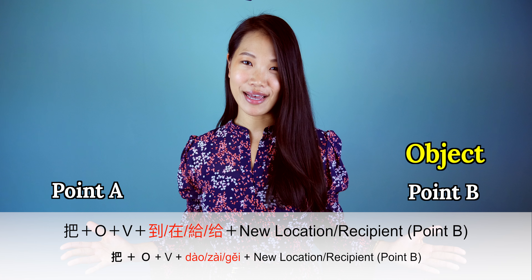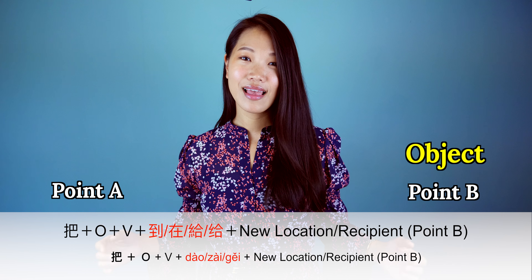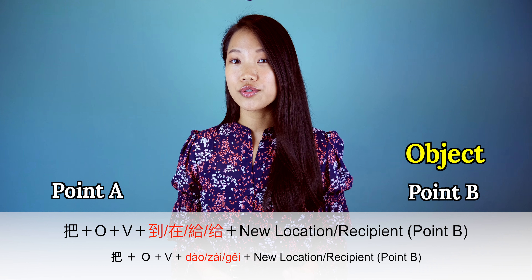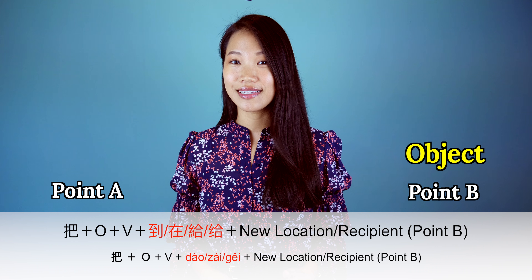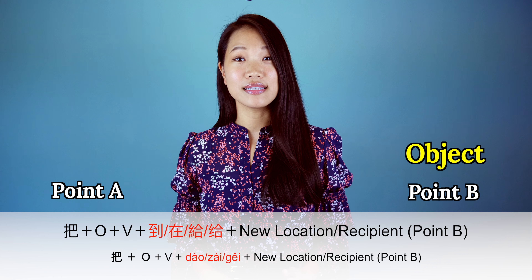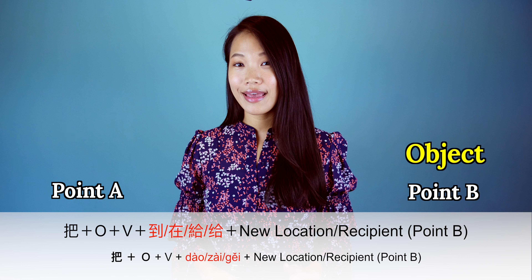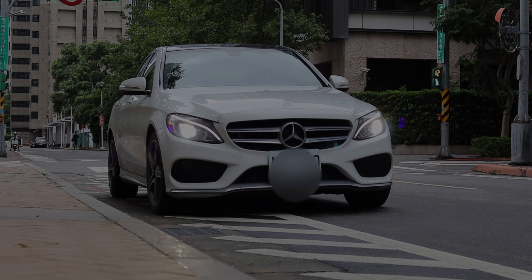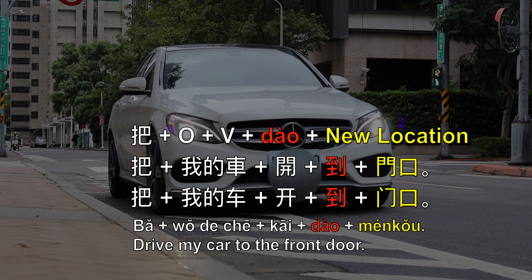When asking someone to move a specific object from point A to point B, we use this sentence pattern. Point A is the object's original location, while point B is its new location or a recipient. For example: 把我的车开到门口 — my boss asks me to drive her car from its original location to the new location, namely the front gate.